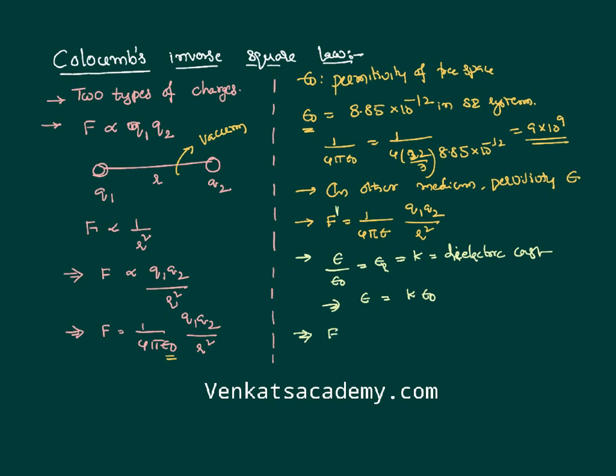So I can write the new force formula when there is a medium. F dash is equal to, in the place of epsilon, I can write epsilon naught into k, Q1 Q2 by R square. Comparing it with the previous equation, everything else is same except that extra k that we have. So I can say F dash is equal to F by k.